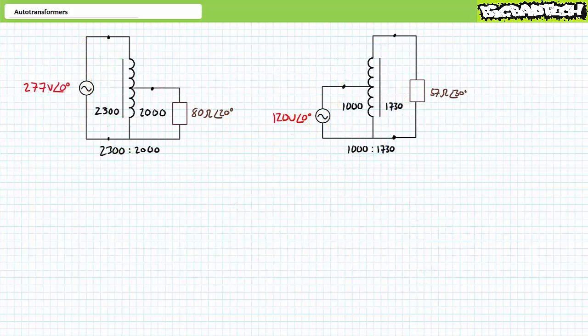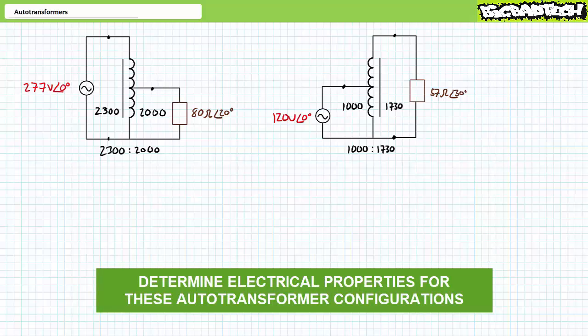Now that we've got a basic understanding of auto transformers in both step-down and step-up configurations, let's see if you can handle these circuits on your own. Given circuits including auto transformers, first determine whether each is a step-down or step-up configuration, then determine the voltage, current, and power experienced by each load as well as the current drawn from the source. Additionally, see if you can illustrate how current flows through the larger circuit. Assume these auto transformers are 100% efficient. The example on the left has 2300 windings in the primary and 2000 windings in the secondary, supplied by a 277 volt source with an 80 ohm at angle 20 degree load. The example on the right has 1000 turns in the primary and 1730 windings in the secondary, powered by a 120 volt source with a 57 ohm at angle 30 degree load. Pause the lecture and try this on your own.